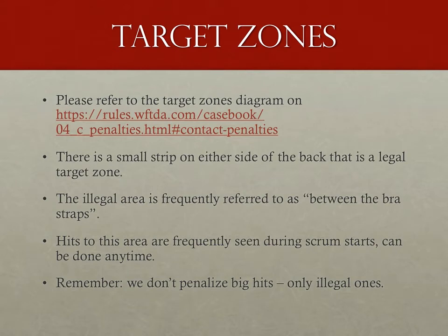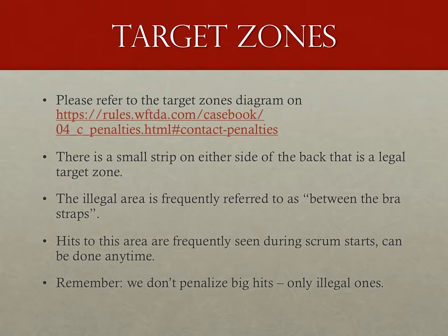Another issue that frequently causes stirs when it comes to blocks from behind is when the block is at the opponent's back, but still in a legal target zone. Pause this video for a moment and look again at the target zones in the rules. There is a small strip on either side as the side target moves into the back that is still a legal target zone. The illegal area is often described as between the bra straps, but outside those bra straps is still a portion of the back that is legally targetable. The most common hits to those areas are by jammers during scrum starts, who frequently purposefully aim between two blockers, putting them in that slim legal target zone on each player's back in order to push between them.